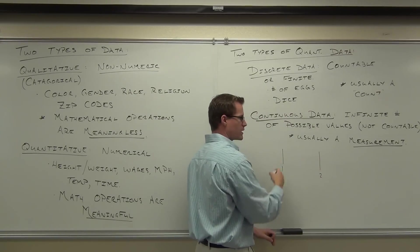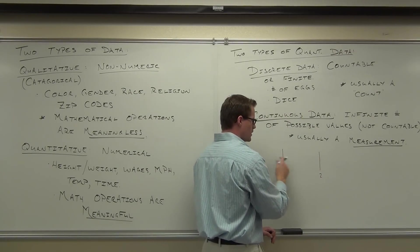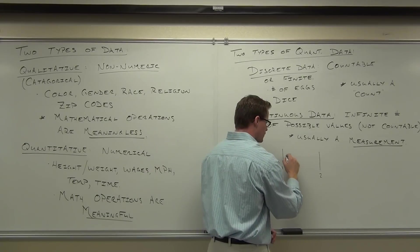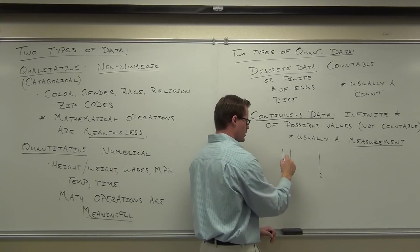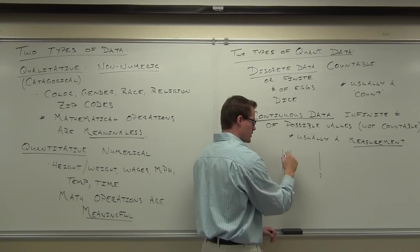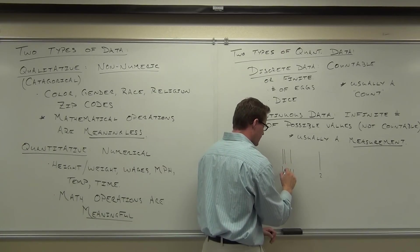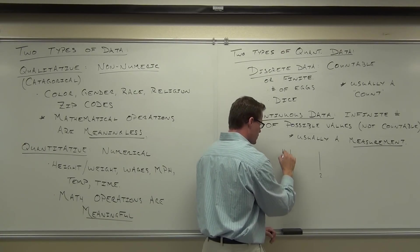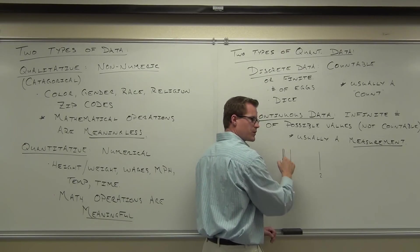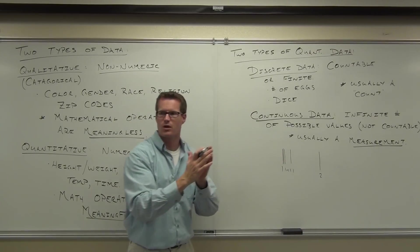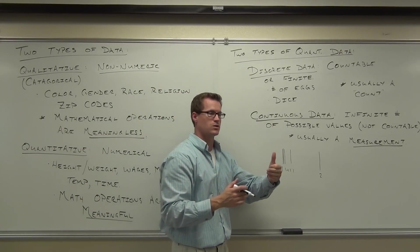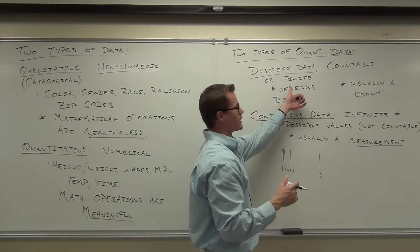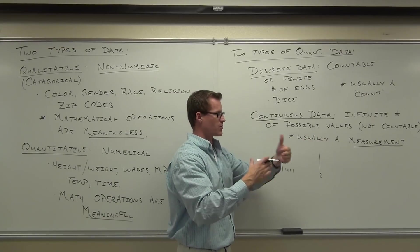Let's say this is a ruler. One inch, two inches. You're measuring something. It could fall - here's one point one. Again, you could be anywhere in here, right? But if you say, here's one point zero one, you can still fall within there. You can get smaller and smaller and smaller. Therefore, you can't count them up. There's an infinite number of possible values you could potentially be. That's why it's not discrete. It's continuous. That's our separation data.